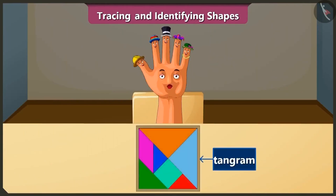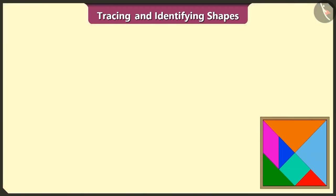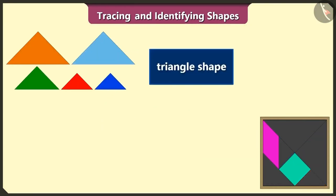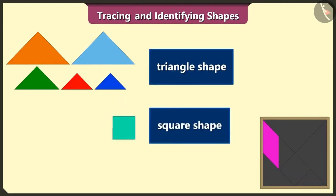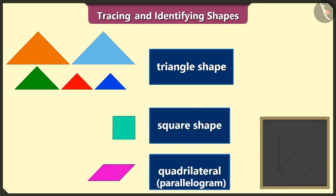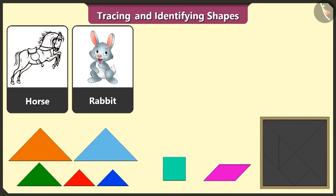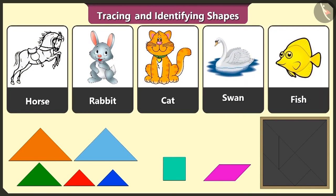This is a tangram. There are a total of 7 shapes in it — it is made of 1, 2, 3, 4 and 5 triangle shapes, one square shape and one quadrilateral. Today, we will create figures of horse, rabbit, cat, swan and fish using these shapes.